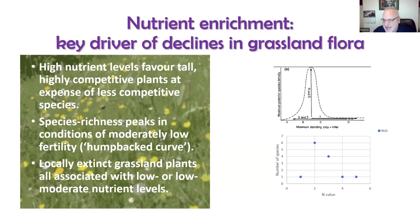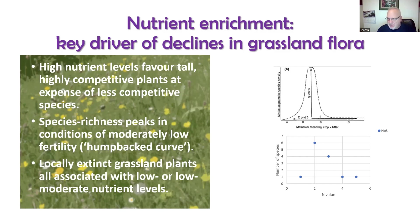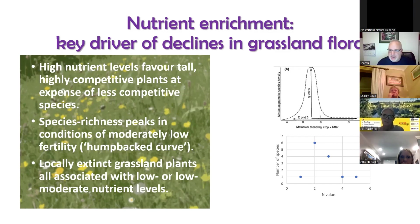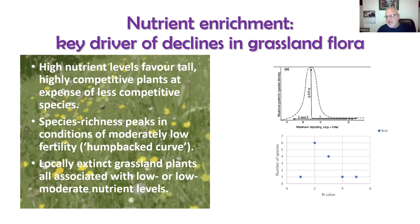One of the fundamental processes you need to understand is nutrients in grassland. Most grassland plants have evolved in environments where soil nutrients are quite a scarce resource. Most plants we'd associate with meadows or limestone grasslands have evolved to make the best use of quite scarce nutrients — that's why these grasslands are often characterized by a really high level of coexistence, with perhaps 30 or 40 species of plants per square meter.